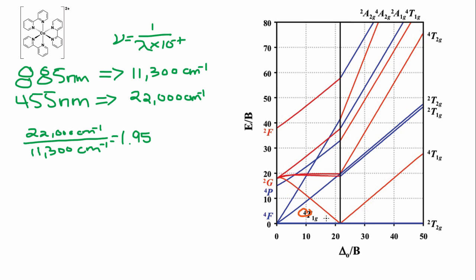This is indeed the high spin case. For the low spin case, originating from the ²T₂g ground state, the two observable transitions would be very close in energy to one another — much closer than a 1.95 ratio. In our spectrum the two absorptions have a significant energy difference, which is consistent with the high spin scenario.